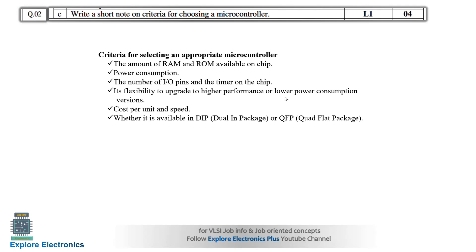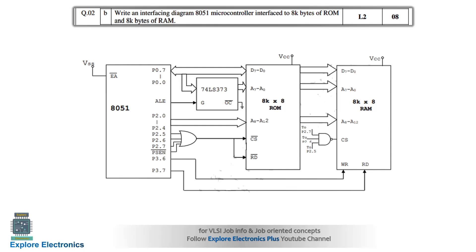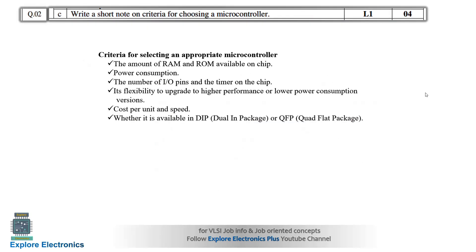Other microcontrollers will have different RAM, ROM, I/O pins, and timers, so we choose based on those. Also consider flexibility to upgrade to higher performance or lower power consumption versions. The 8051 supports external RAM and ROM up to 8K or 16K. Cost per unit, speed, and whether the device is available in DIP (Dual In-line Package) or QFP (Quad Flat Package) also need to be considered. These are the first module questions and answers.